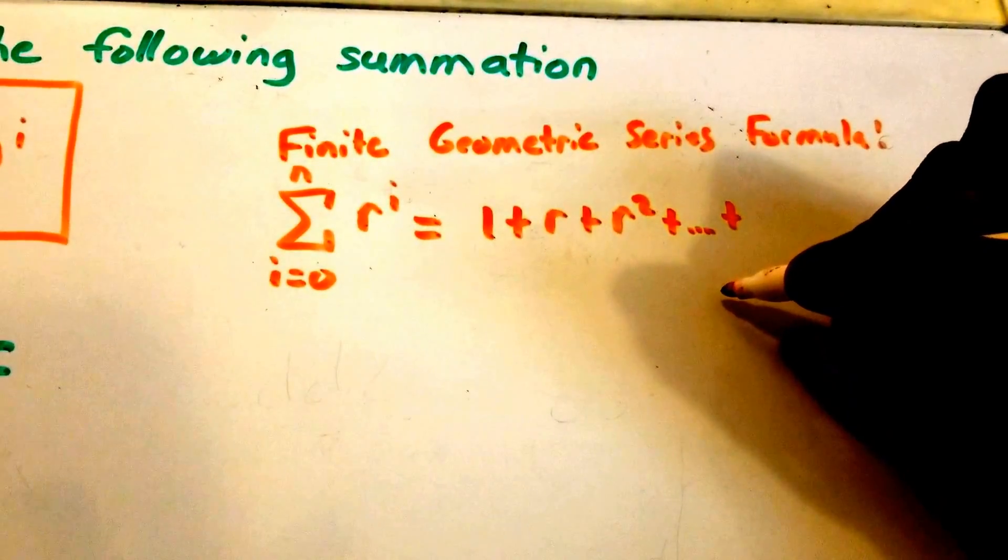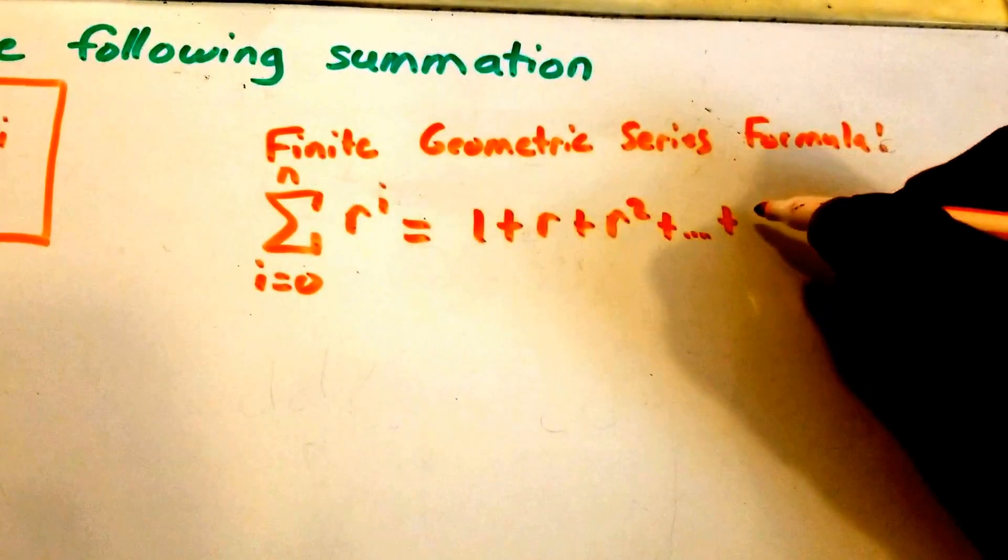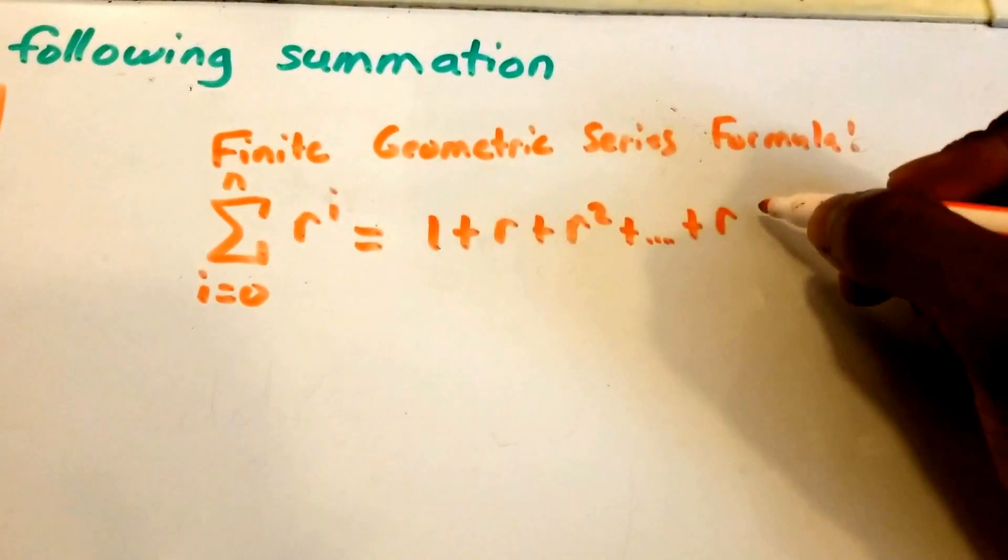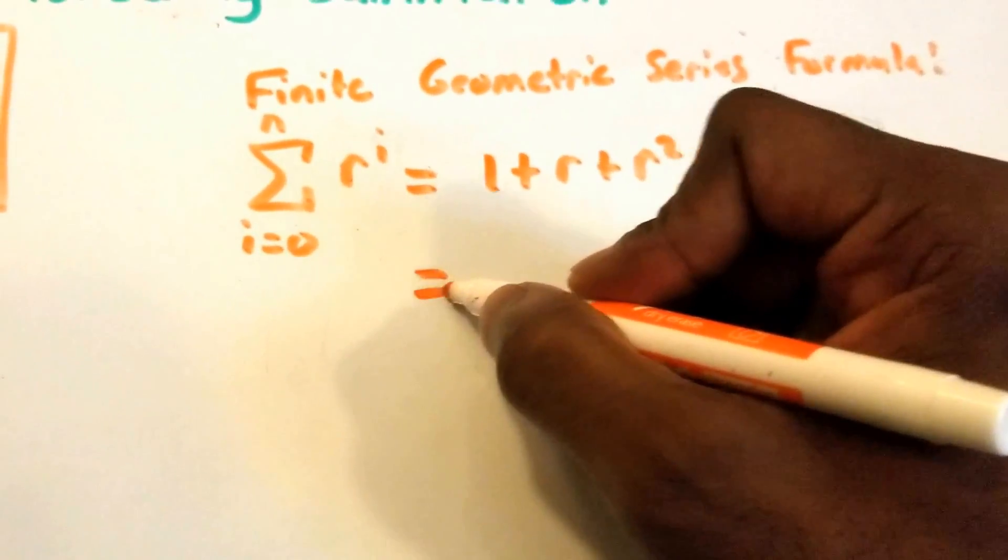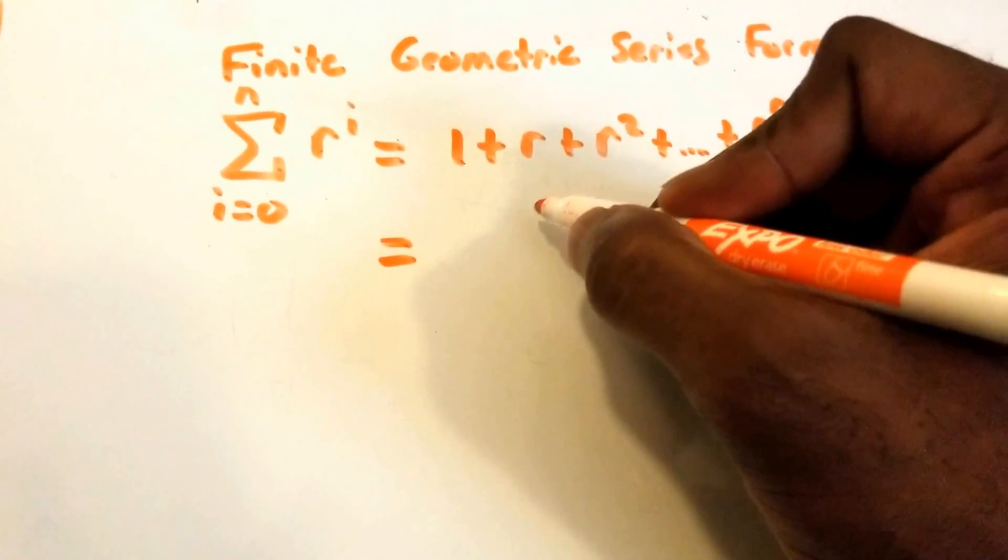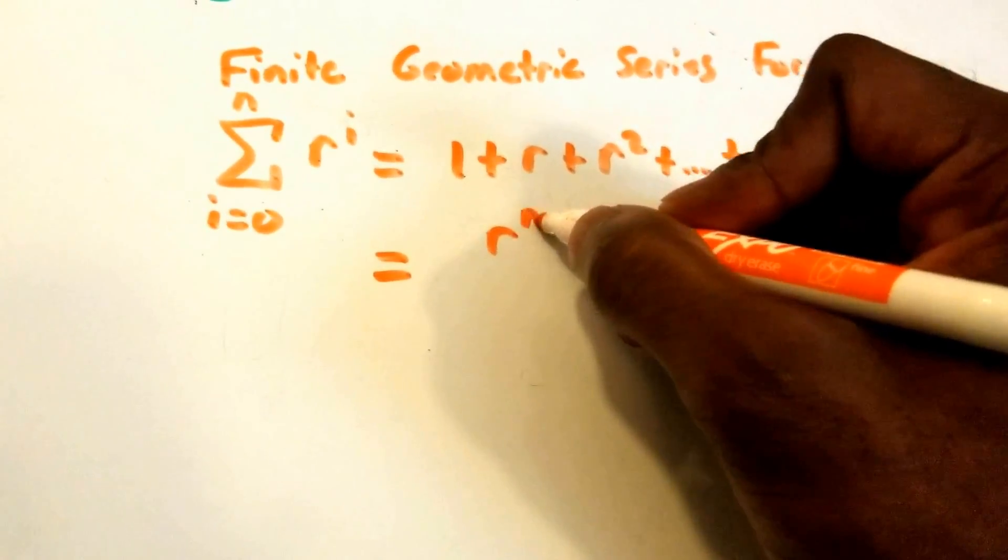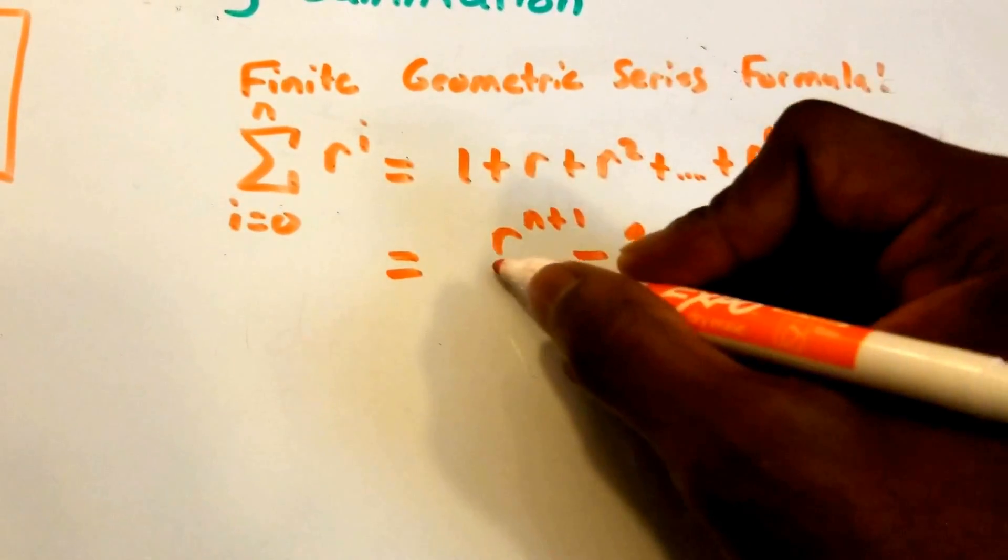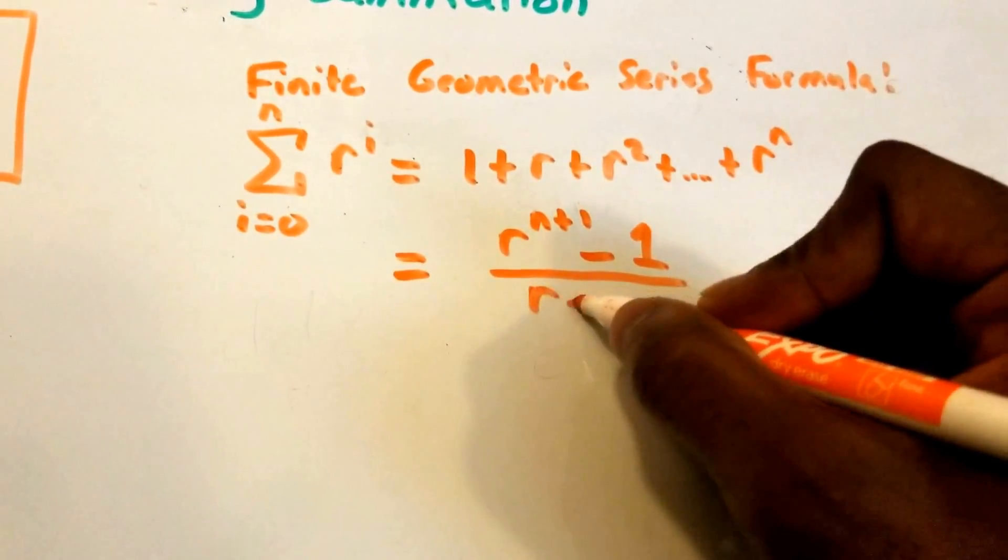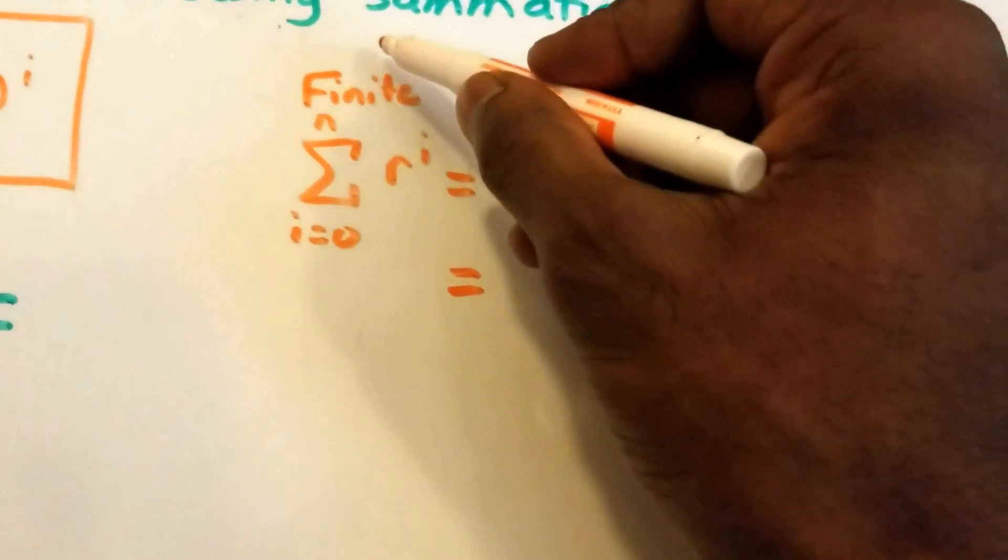(r^(n+1) - 1) / (r - 1). So this is the formula, and of course since r is in the denominator, r does not equal 1.